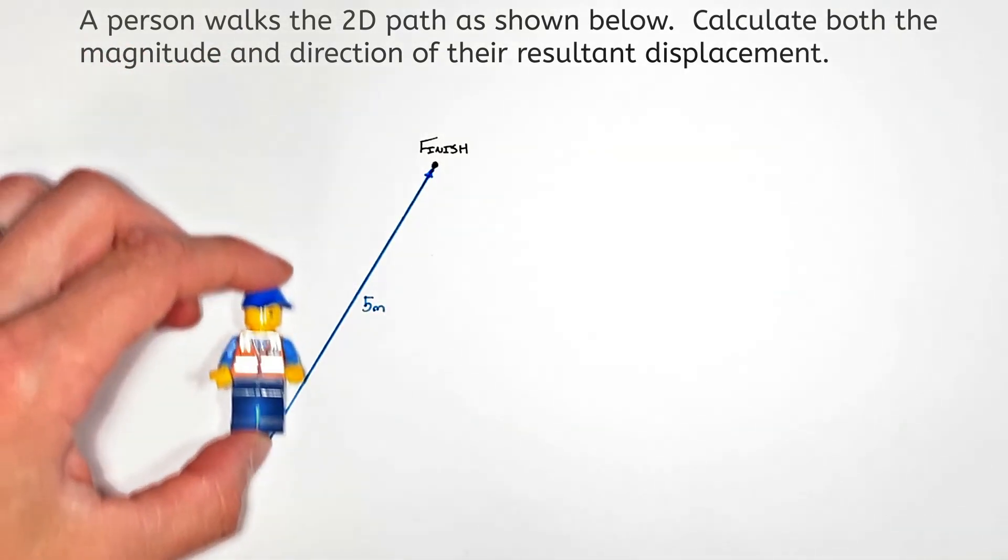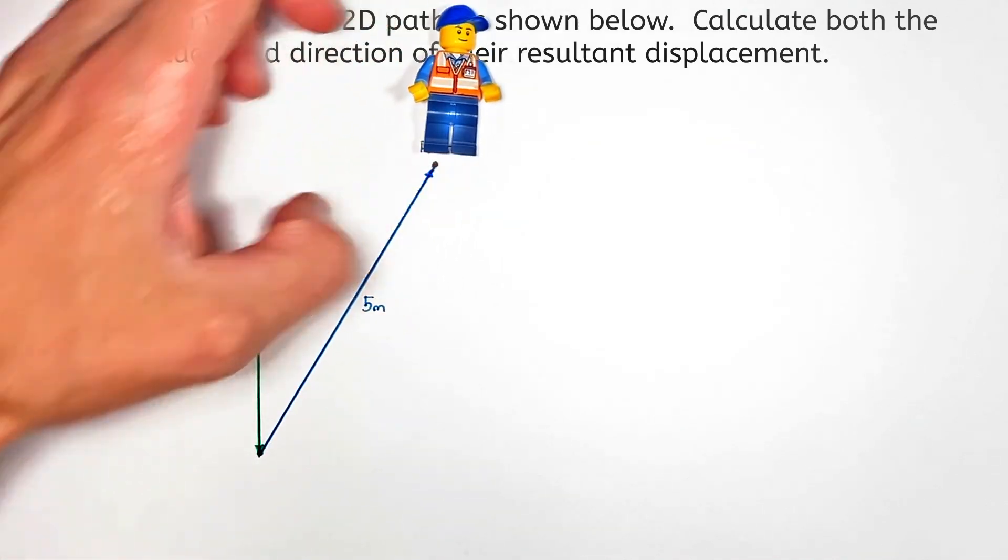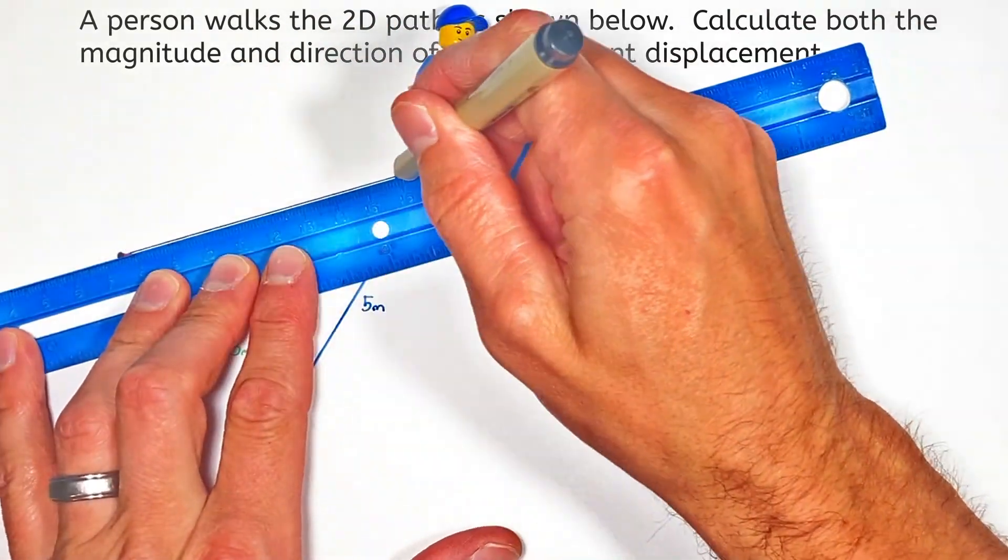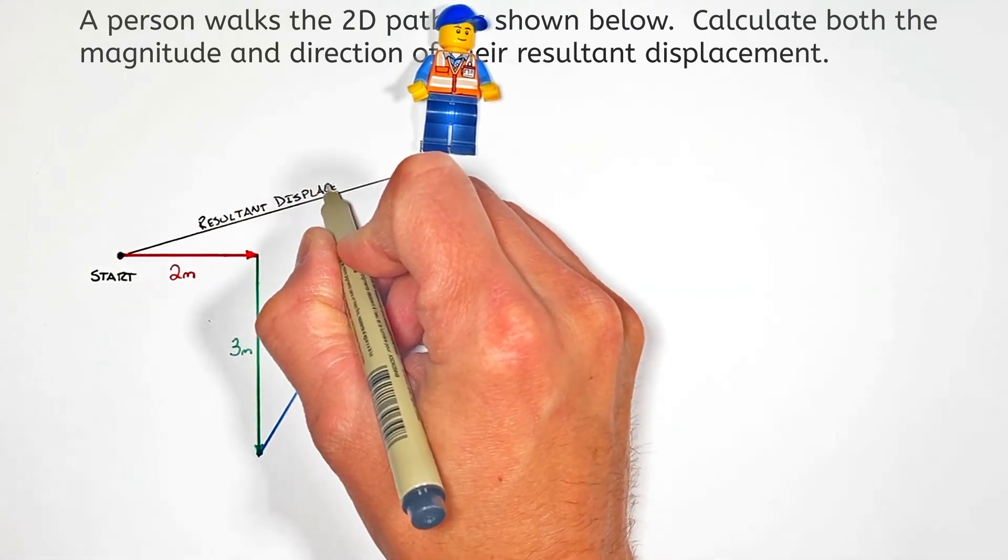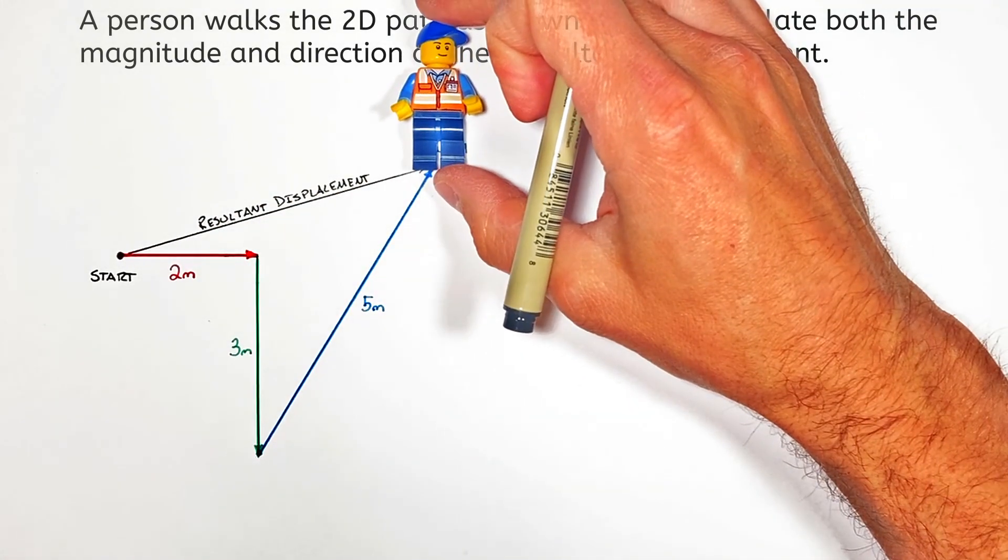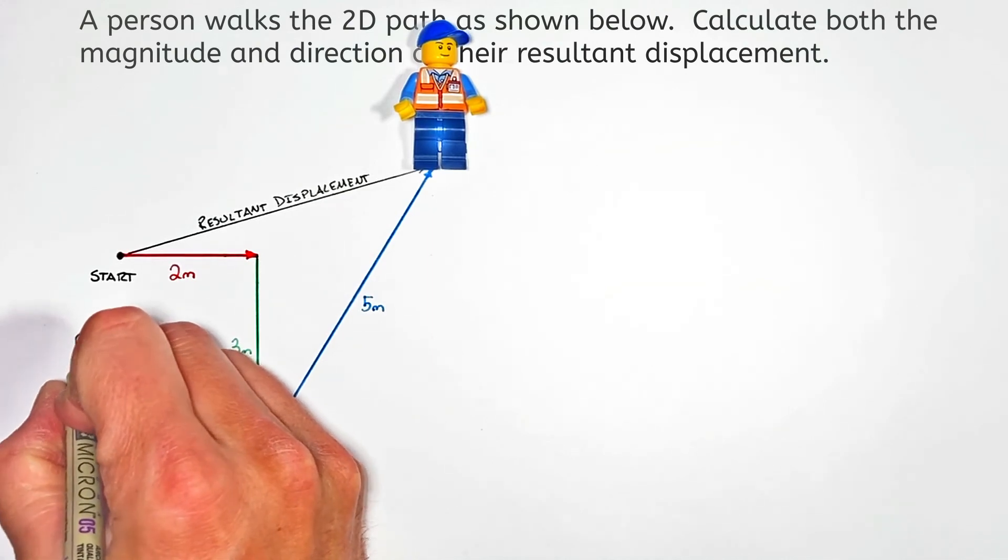Today we're going to look at the displacement of this little dude as he walks around and solve for something called the resultant displacement. Now, we're looking at displacement vectors, but this method of adding vectors together can be applied to any type of vector.